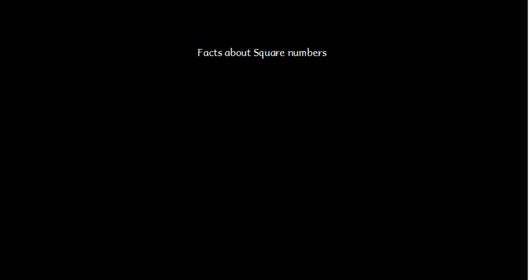Hello everyone, today we are going to learn some facts about squared numbers. The first one: a number ending with odd number of zeros is never a perfect square. So when I am saying a number ending with odd number of zeros, let us take an example.